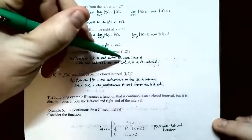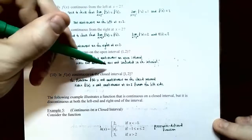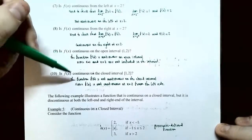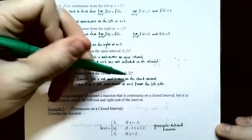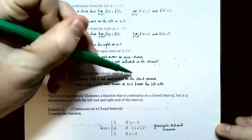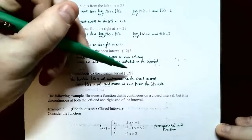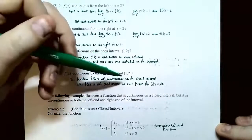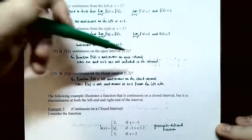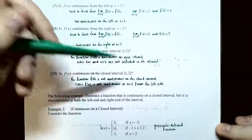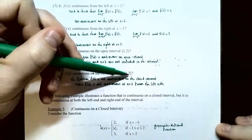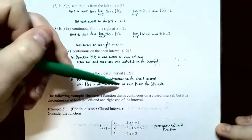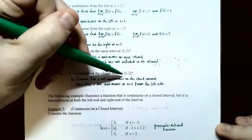Number 10: Is the function continuous on the closed interval [1, 2]? We need it to be continuous everywhere between 1 and 2, including at the endpoints. The function is continuous on the open interval and continuous on the right at x equals 1, but it is not continuous on the left at x equals 2. So the function is not continuous on the closed interval [1, 2].